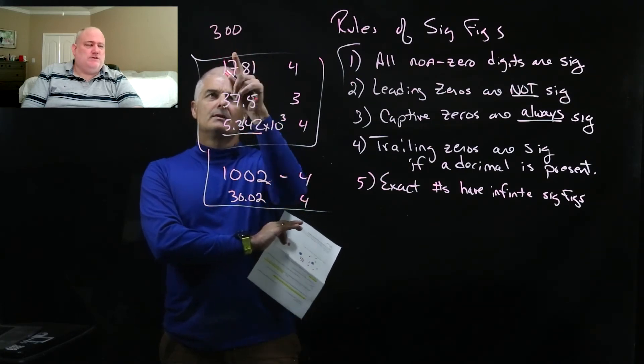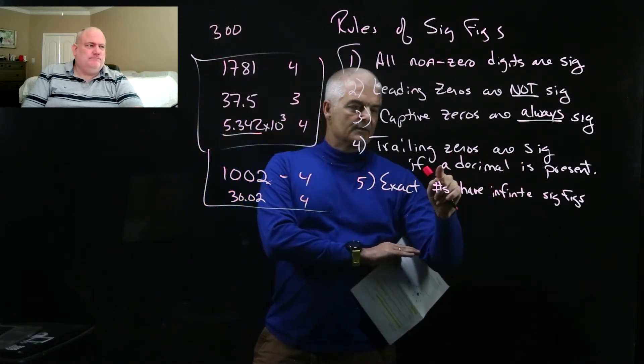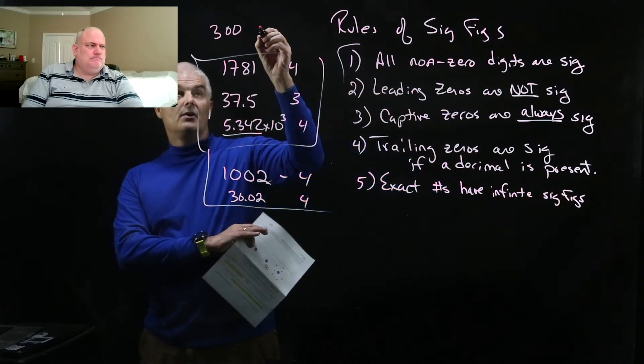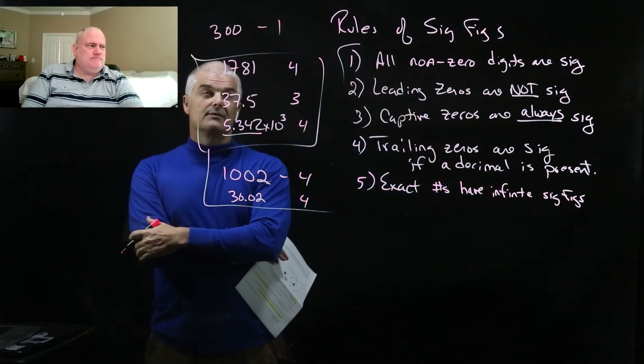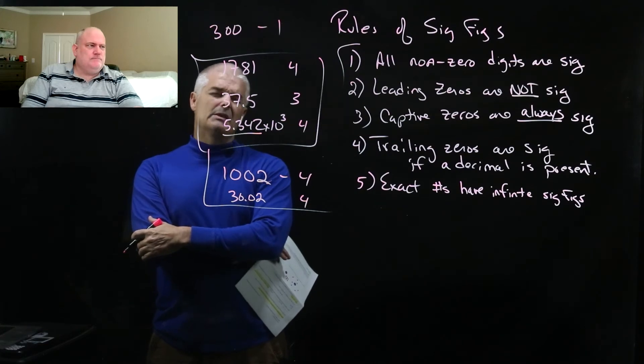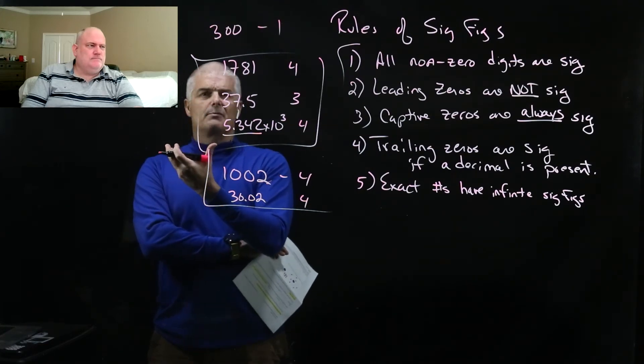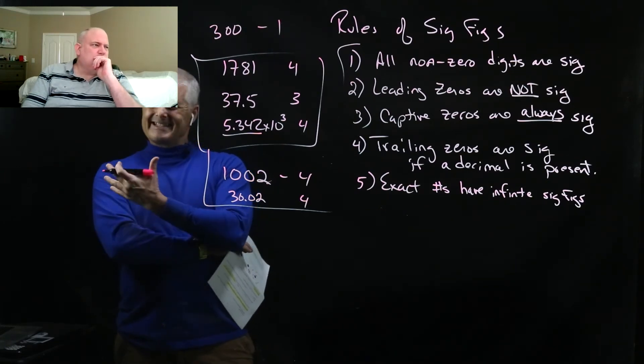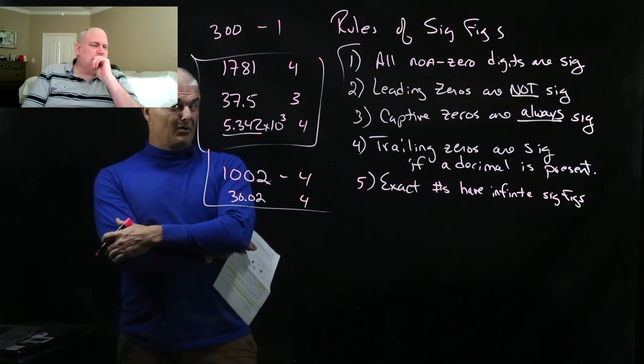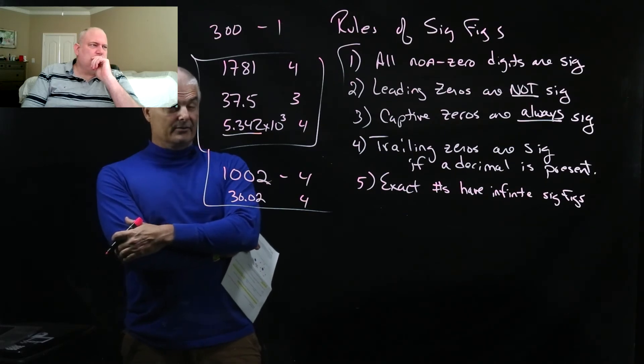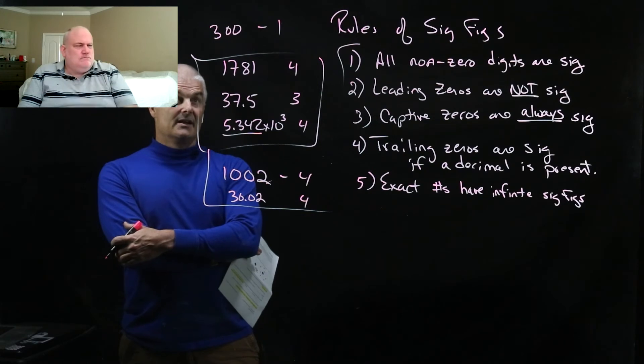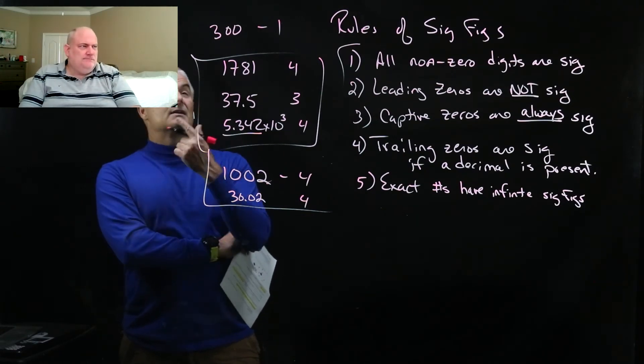The trick comes when we get to problems like this. If I have 300, so 300 has what? What kind of zeros are those? Trailing zeros are significant if a decimal is present. Do you see a decimal? No. That's just one significant digit. That means basically the measurement is from here. So like I'd say the distance from here to Dallas is 300 miles. I bet that's in the neighborhood, right? But it's just kind of a ballpark. It's not exactly 300 miles.